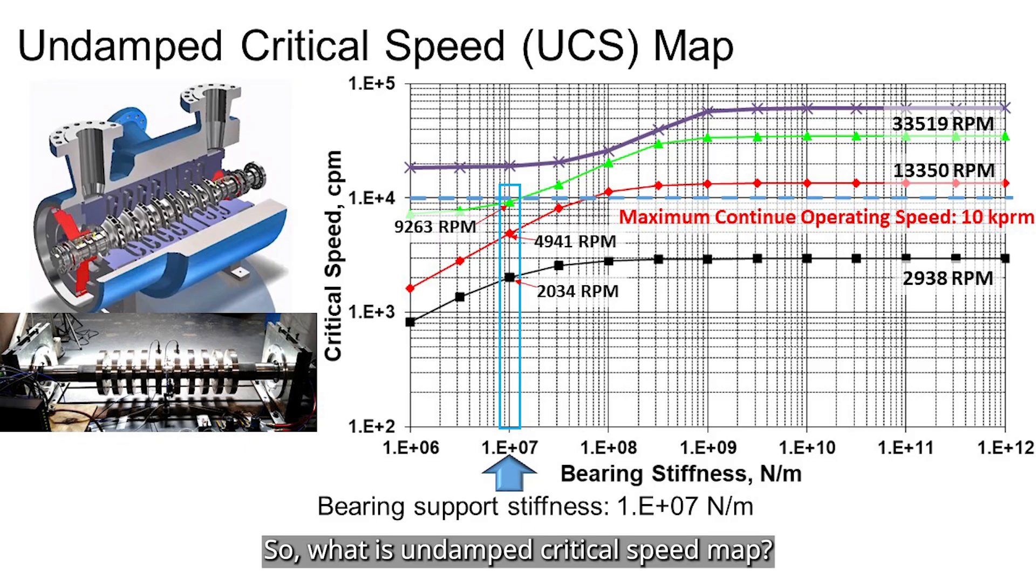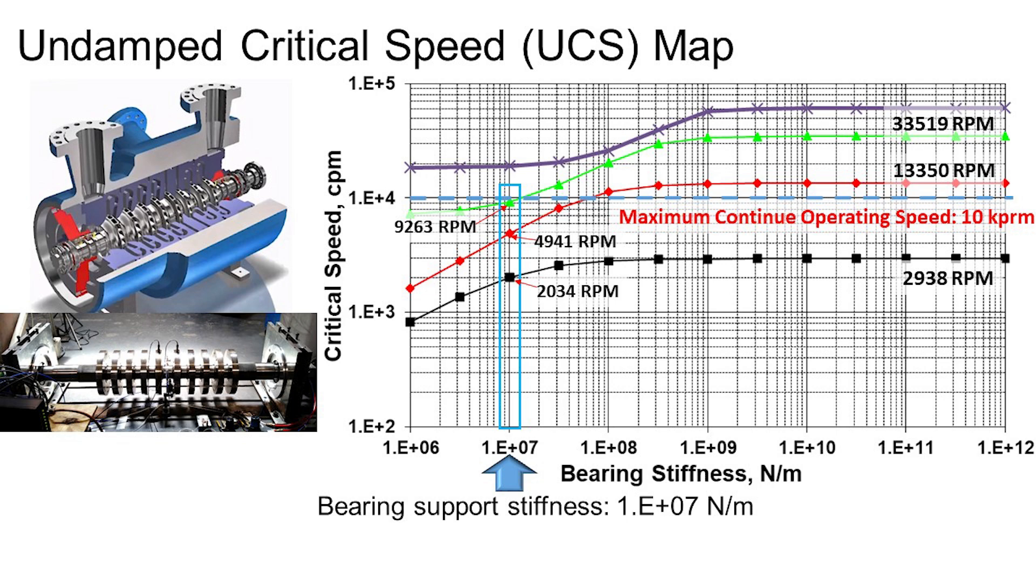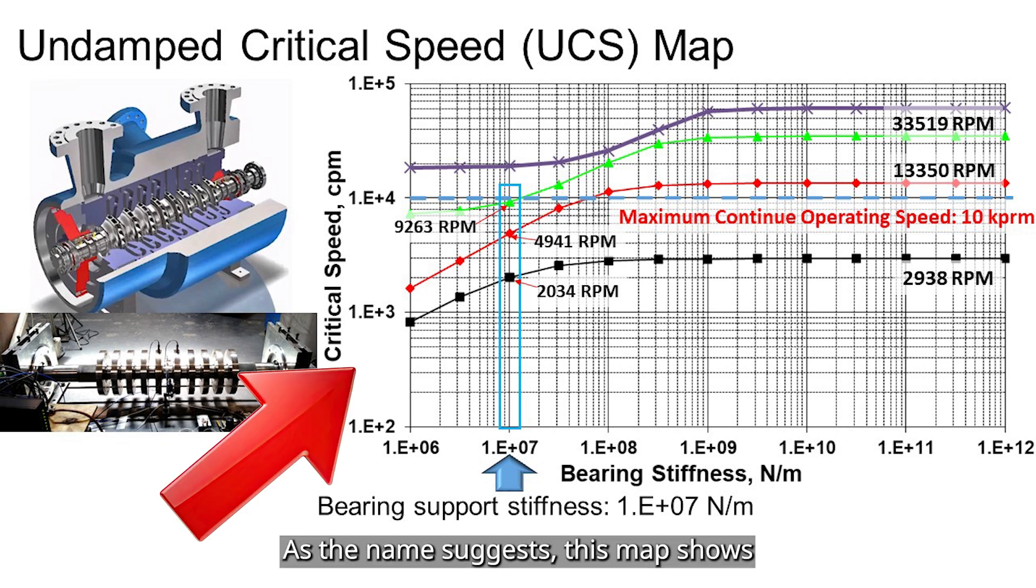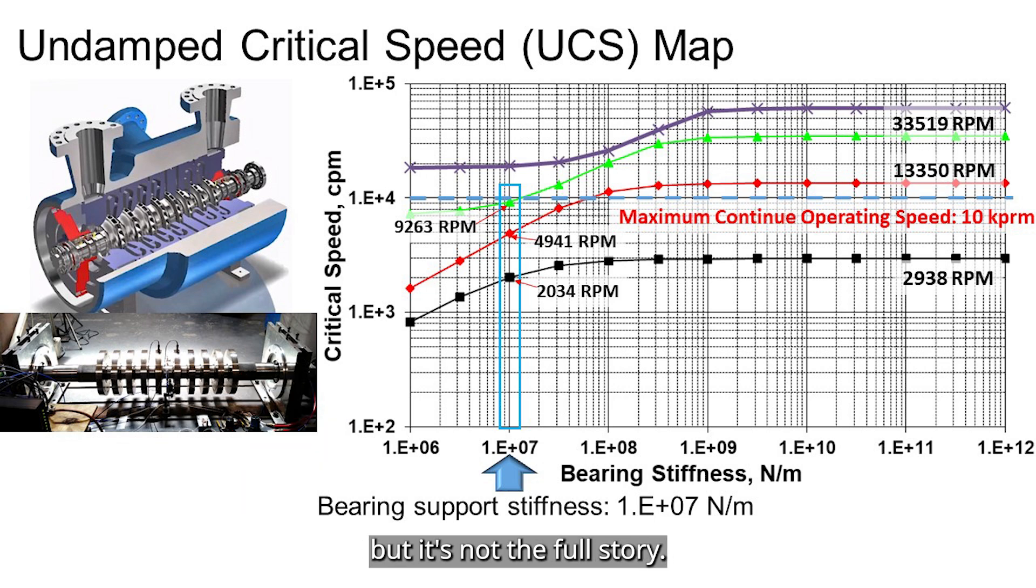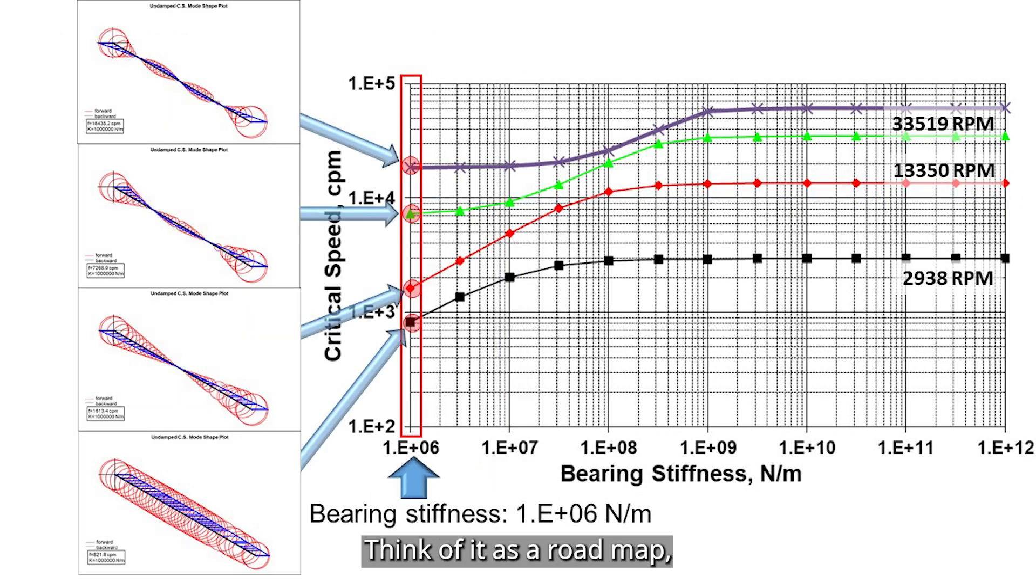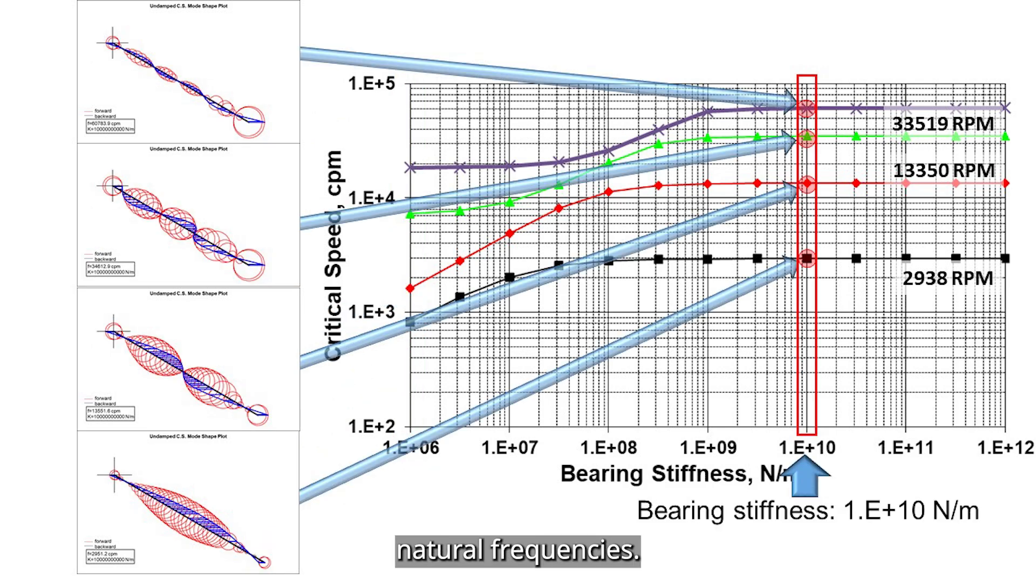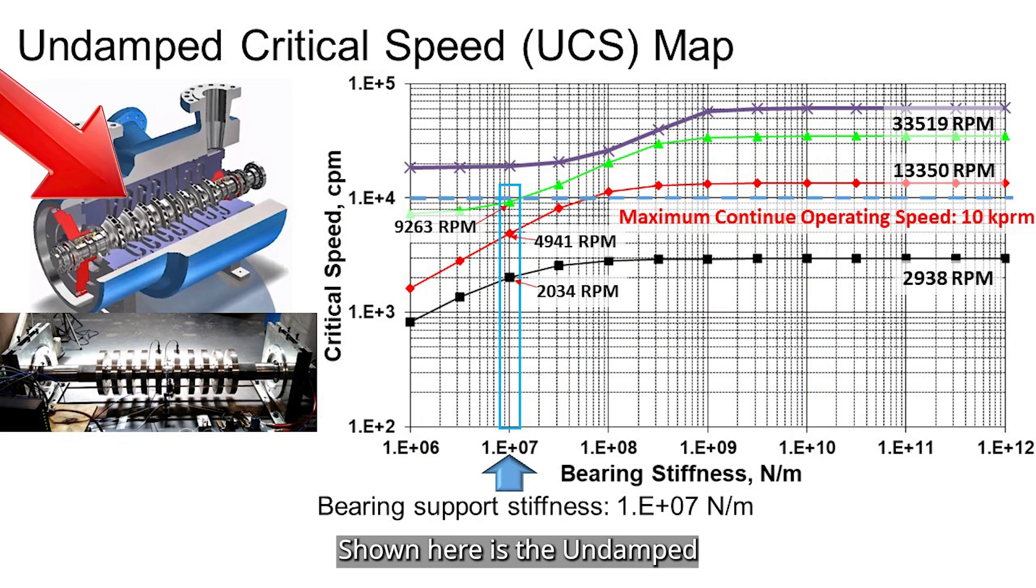So what is undamped critical speed map? As the name suggests, this map shows the critical speed of a rotor without considering damping. It gives us a lot of insight, but it's not the full story. Think of it as a road map, which is helpful for direction. The undamped critical speed map illustrates the rotor's natural frequencies. That's why it's sometimes referred to as the undamped natural frequency map. Shown here is the undamped critical speed map for a centrifugal compressor.